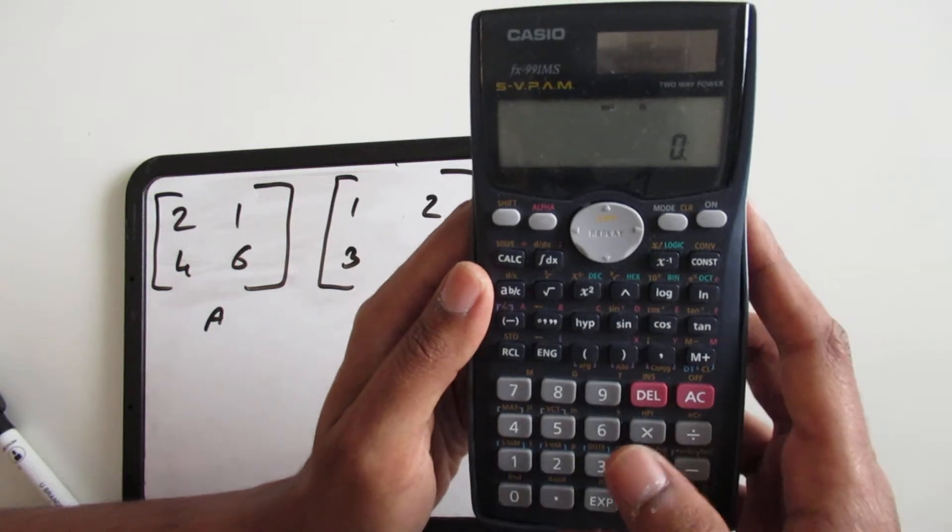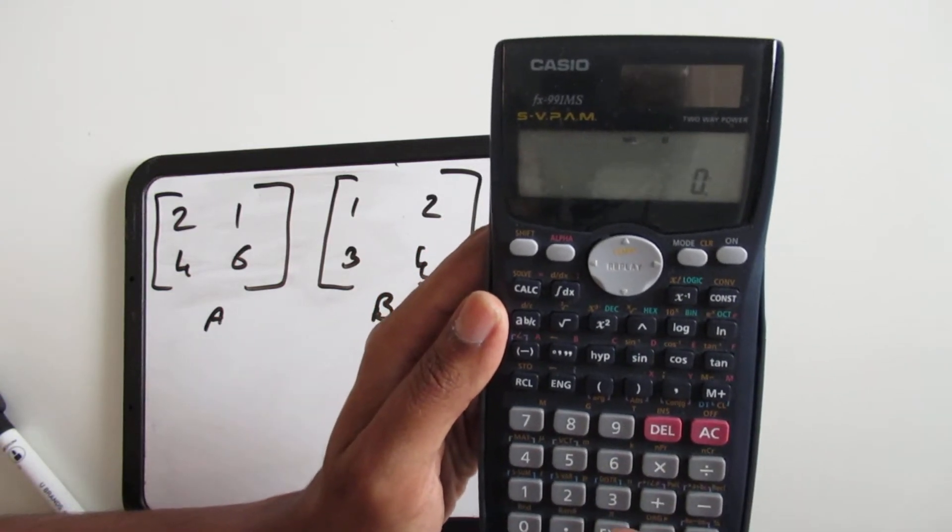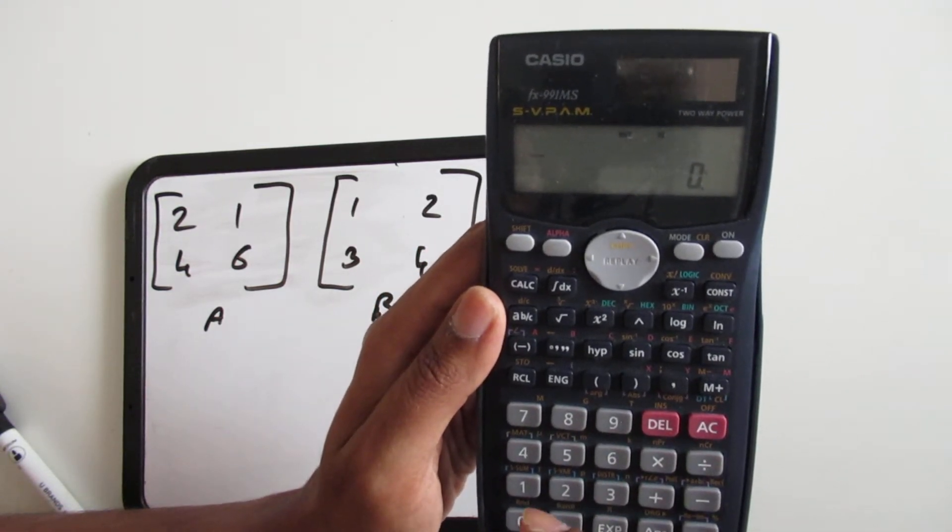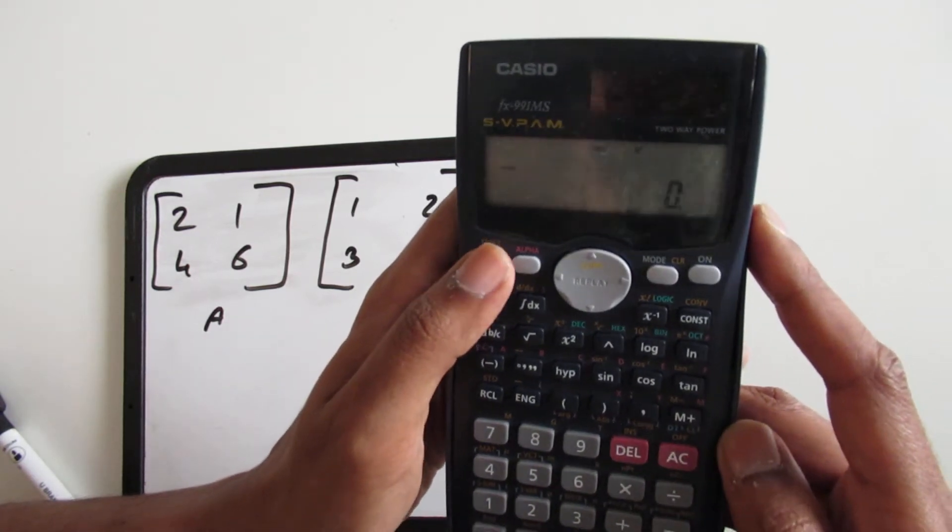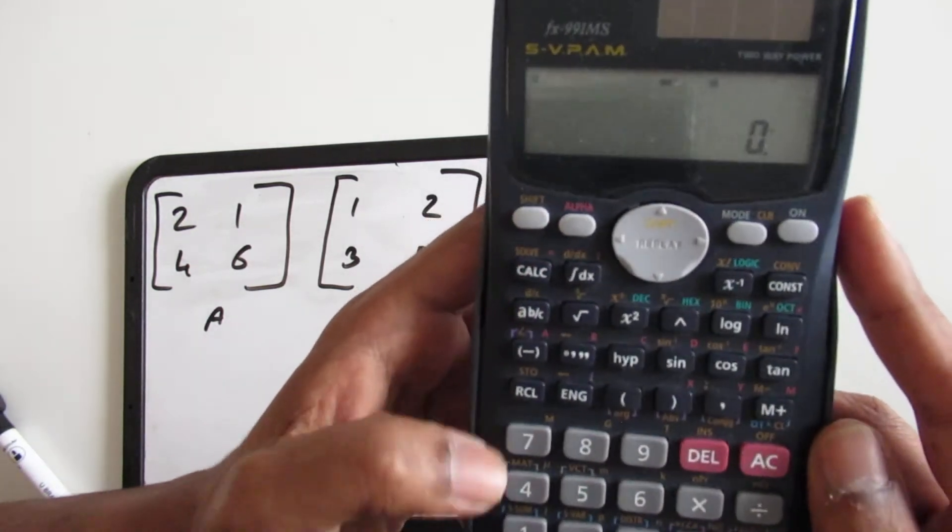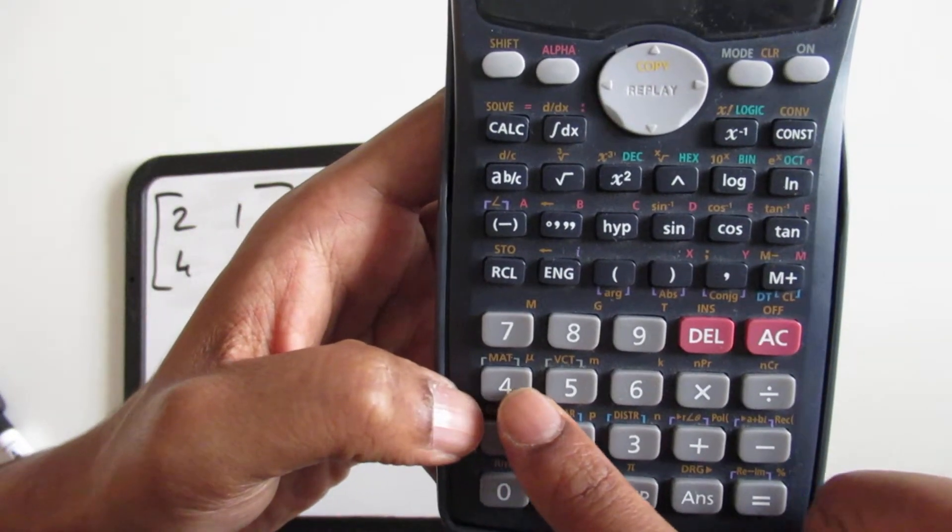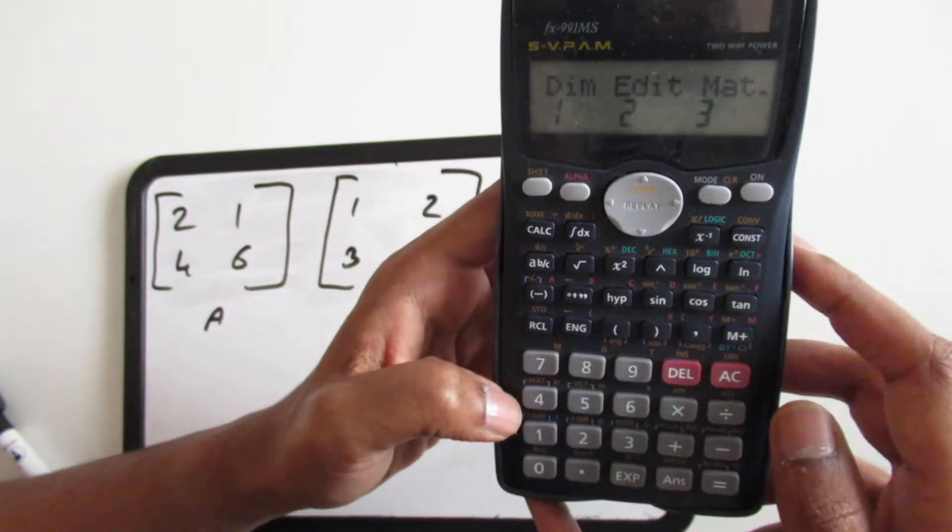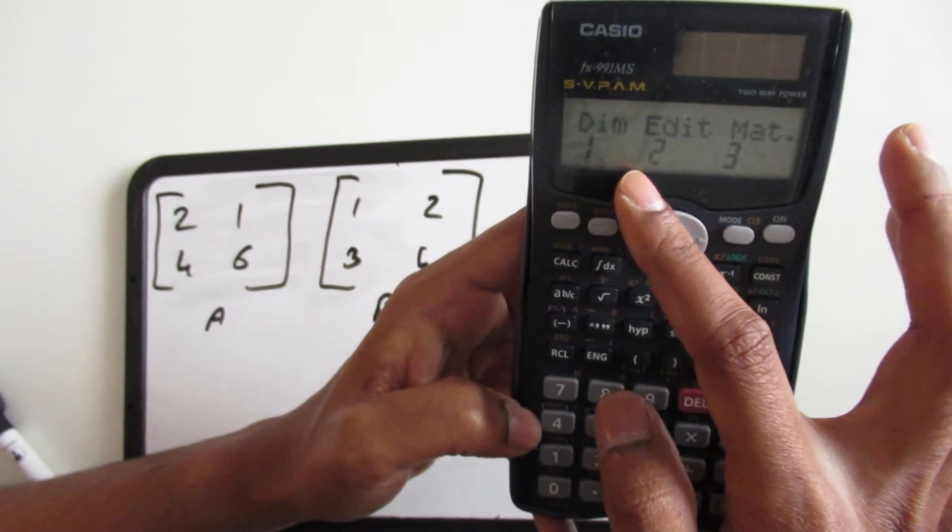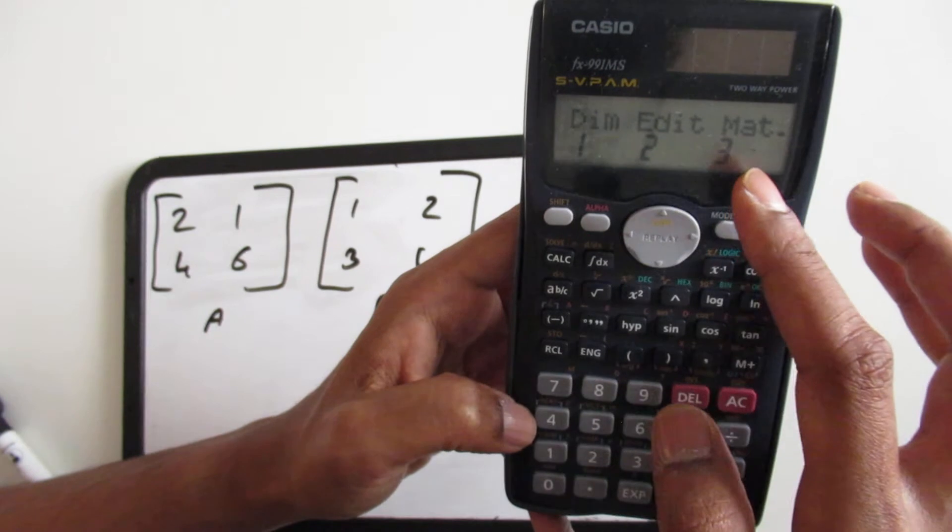So we press 2. Now it's in the matrix mode so now we're going to input the values of matrix A and matrix B. What you need to do for that is press shift and then press the matrix button which is right above the number 4.